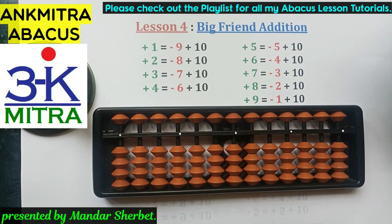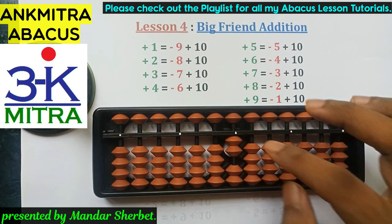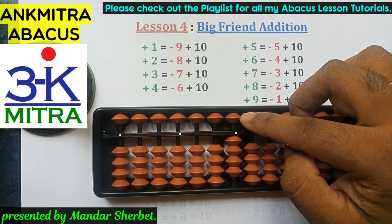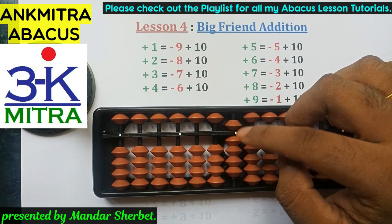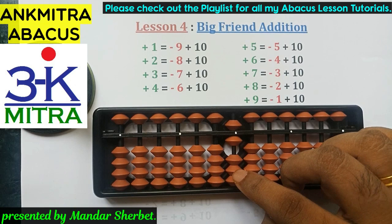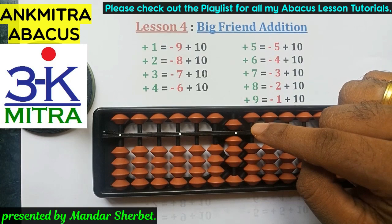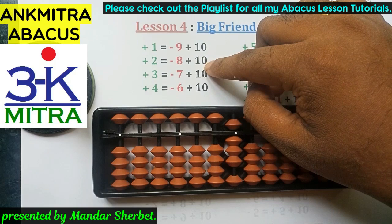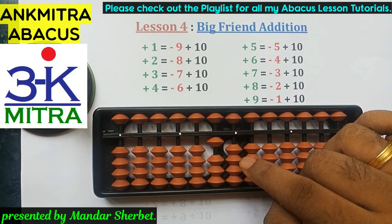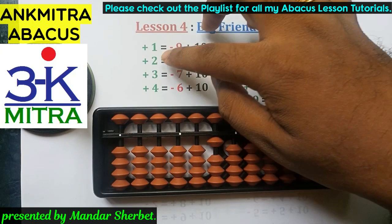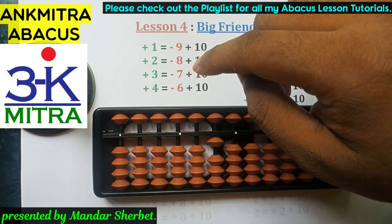Now let's look at adding the number two repeatedly. The first two and second two are added directly — enough beads available each time. For the third addition of two, we can't do it directly, but the upper bead of five is available, so we use the small friend formula: plus five minus three. For the next two we have enough beads. For the following two, beads on the lower side are insufficient and the five bead is already used, so we use the big friend formula.